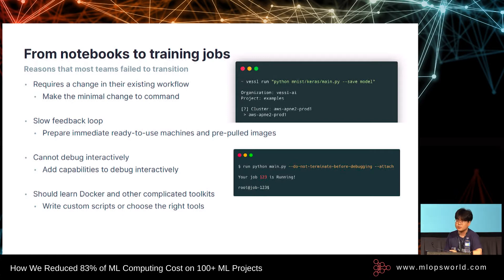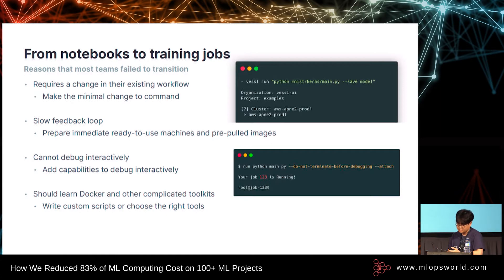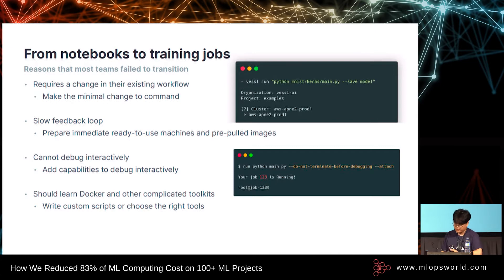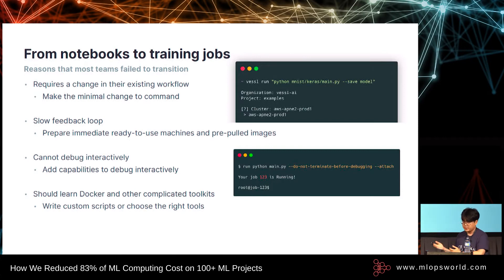We are going to open these tools to GitHub later this year. But before that, you can write your own code with Kubernetes or Kubeflow. About the slow feedback, it is the most difficult part to handle, but it can be solved with a bit of engineering. We reduce preparation time to less than 10 seconds by programming some instances to prepare immediately ready-to-use machines and preparing Docker images to the machines. We also enable interactive debugging through SSH terminal by leaving the containers unterminated for 30 minutes after a process ends.